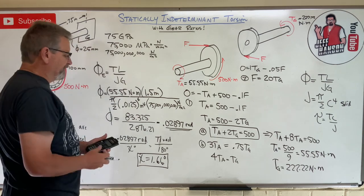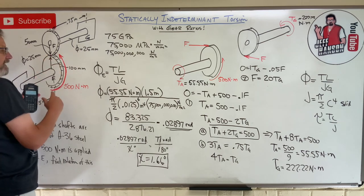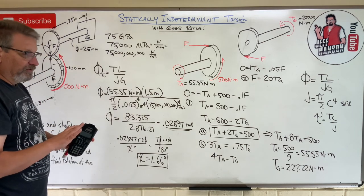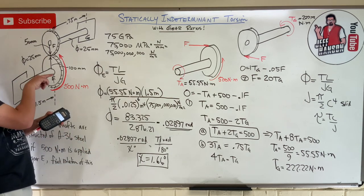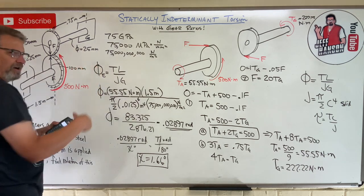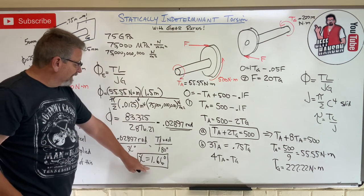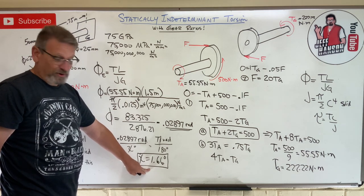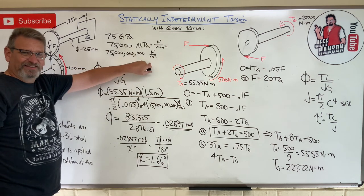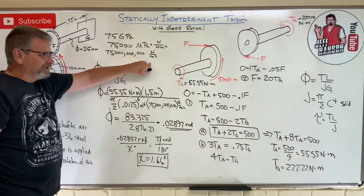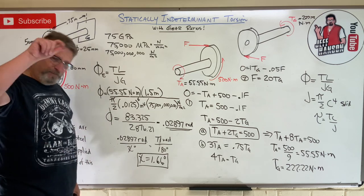The rotation of gear E is 1.66 degrees. As for direction — counterclockwise or clockwise — it depends on your perspective. If you're looking one way it's counterclockwise; looking at the other end of the shaft it's clockwise. But it rotates 1.66 degrees. That's about as hard a question as you'll see on a torsion test. If you can do that, you can do anything I throw at you this semester. Hope that helps — see you on the next video.